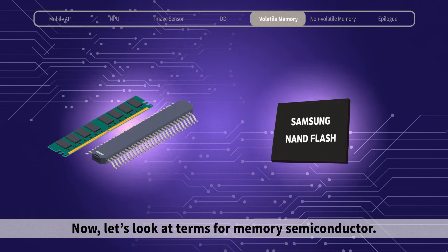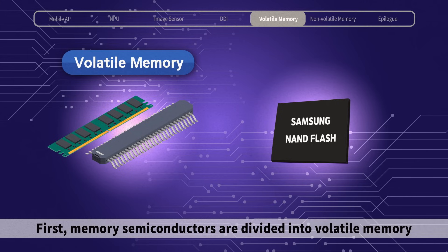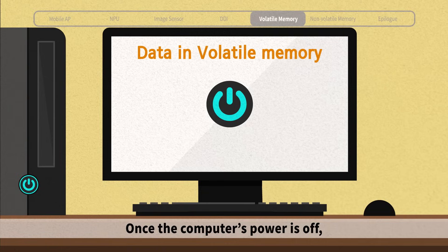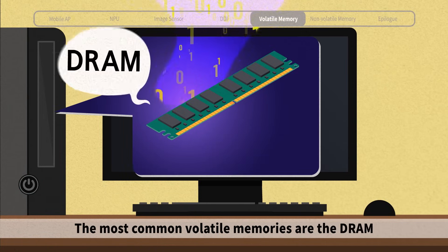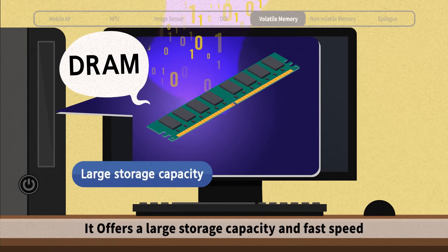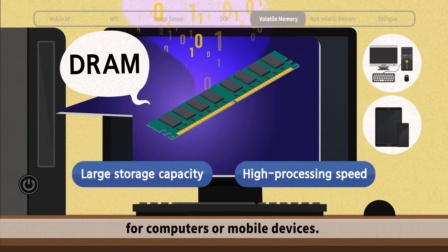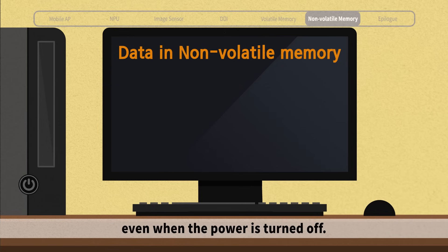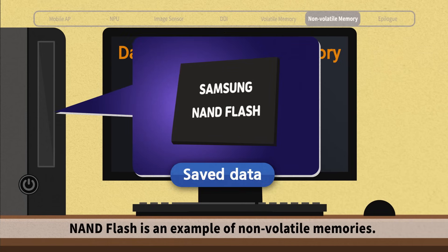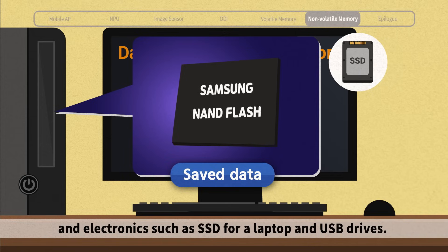Now let's look at terms for memory semiconductors. Memory semiconductors are divided into volatile memory and non-volatile memory. Once the computer's power is off, the data on volatile memory vanishes. The most common volatile memory is DRAM, which offers large storage capacity and fast speed, and is mainly used as the main memory for computers or mobile devices. In non-volatile memory, the data saved does not disappear even when the power is turned off. NAND flash is an example of non-volatile memory, used as the storage device for various mobile devices and electronics such as SSD for a laptop and USB drives.